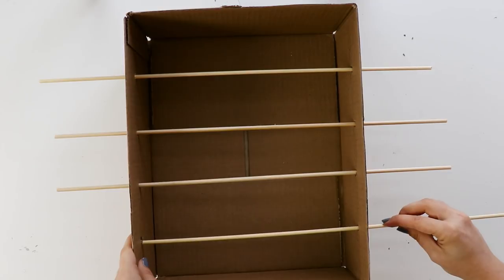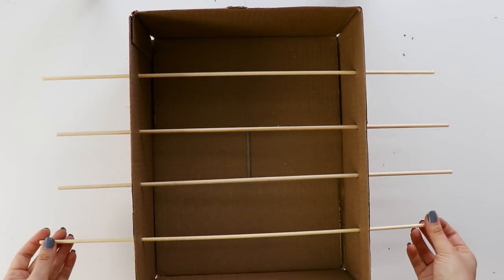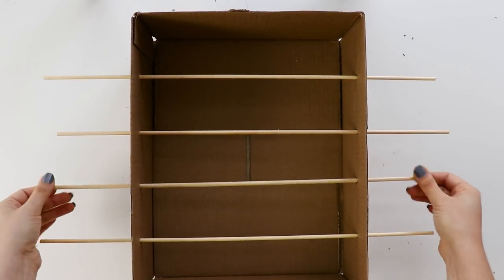Once you have four holes punched on each side, you can stick your dowels through them just to make sure that they sit nicely and you have enough space to turn and move them.